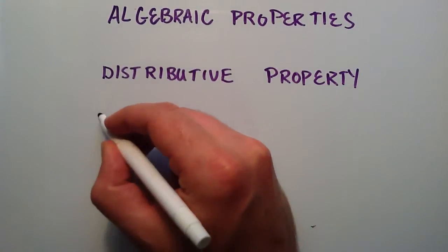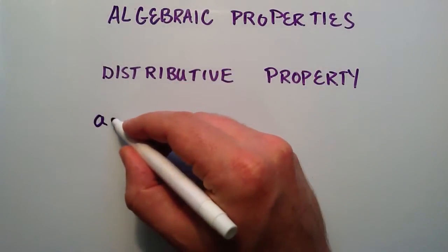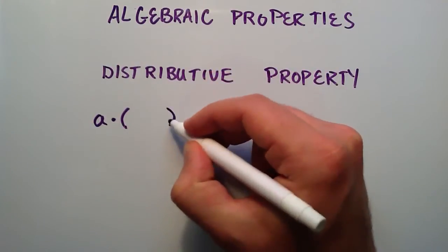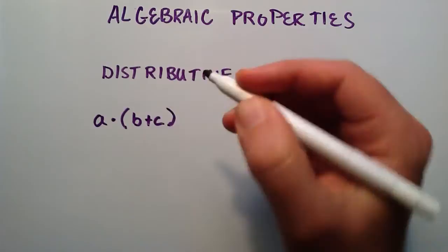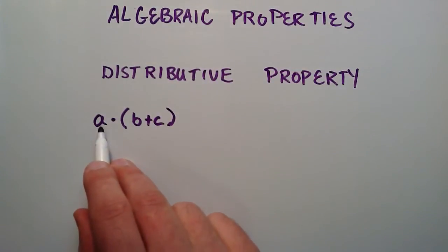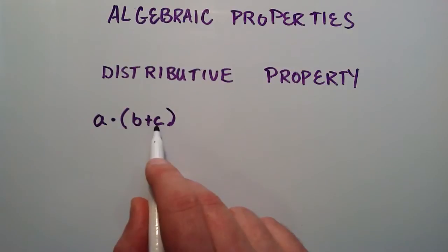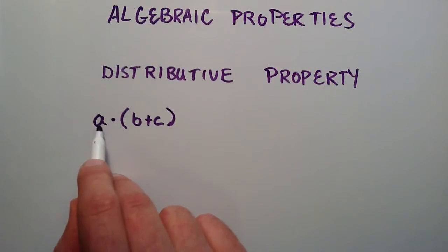So the distributive property looks like this. You have some number, we'll just call it a, and then we're going to multiply that number by a couple other numbers added together inside parentheses, so b plus c. This is basically saying that we're going to add b and c first. By order of operations we do what's inside the parentheses first. So we're adding b plus c together, and then that result we're going to multiply by whatever a is.